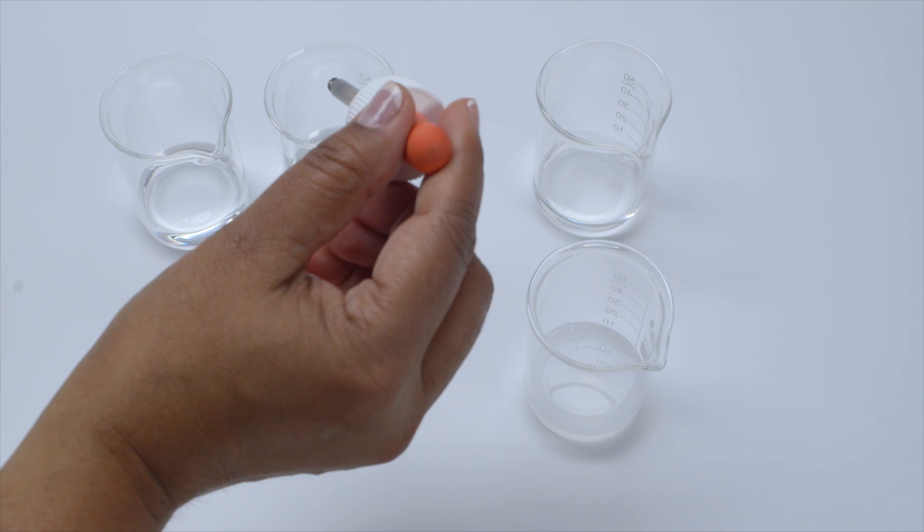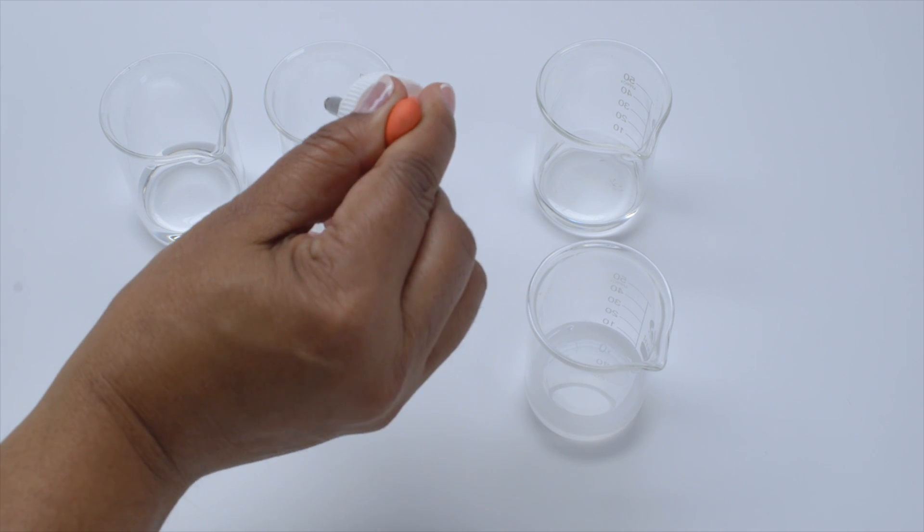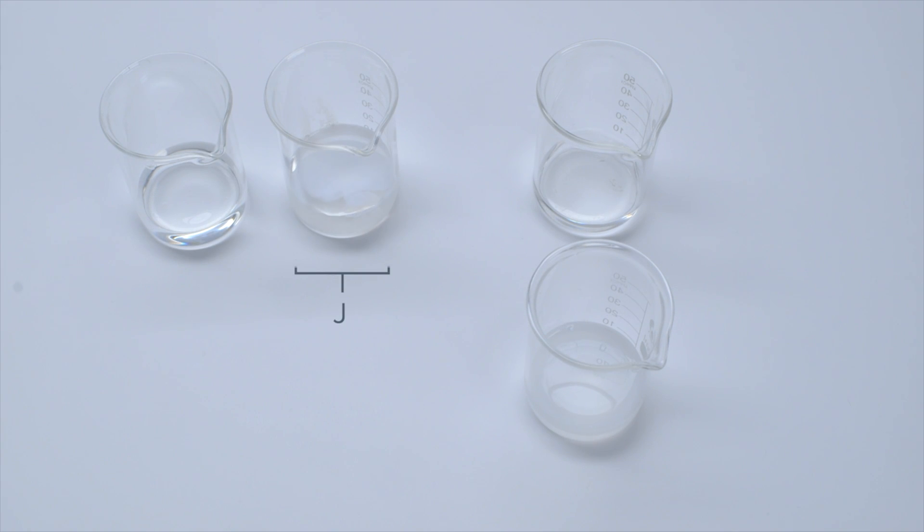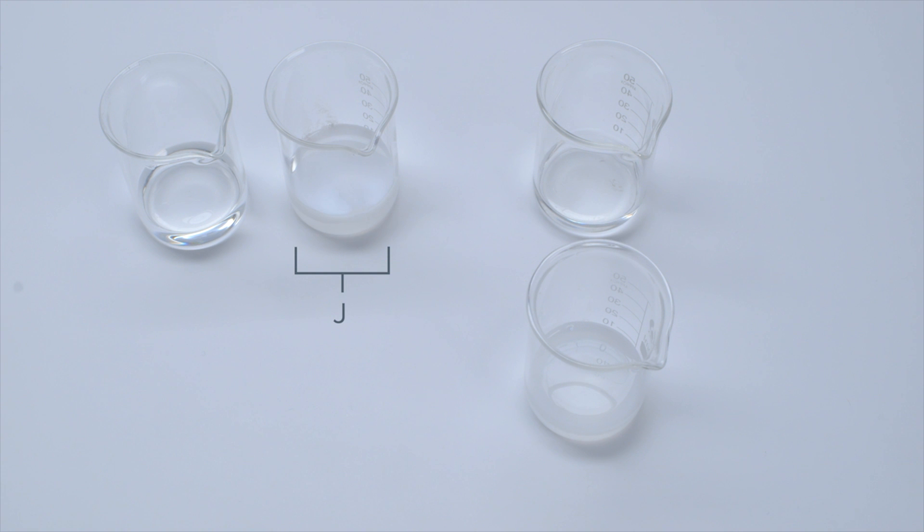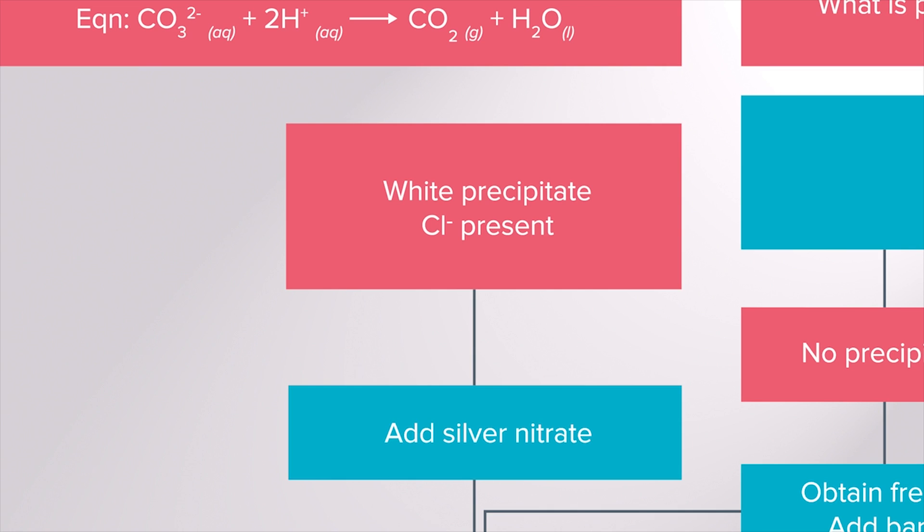If no precipitate forms a fresh sample needs to be obtained and silver nitrate needs to be added. If a creamy coloured precipitate forms which darkens on standing then it is silver chloride and we have confirmed that chloride ions were present.